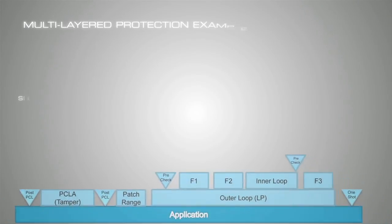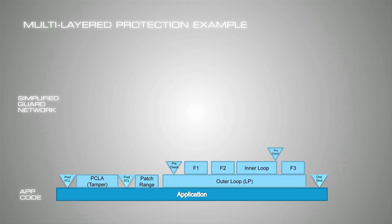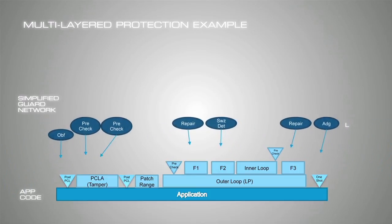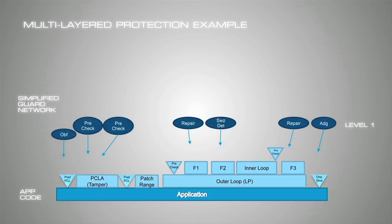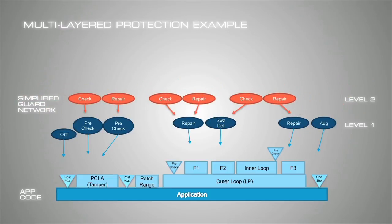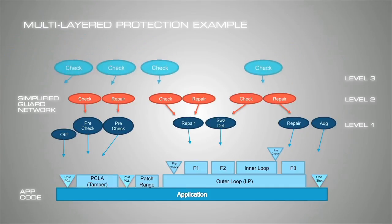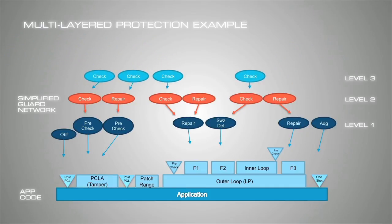What makes ArcSan protection uniquely strong is that we layer these guards and enable network protection with no single point of failure. Level 1 guards directly protect code. Level 2 guards protect level 1 guards to ensure they're not violated. Similarly, level 3 guards protect level 2 guards, and so on.